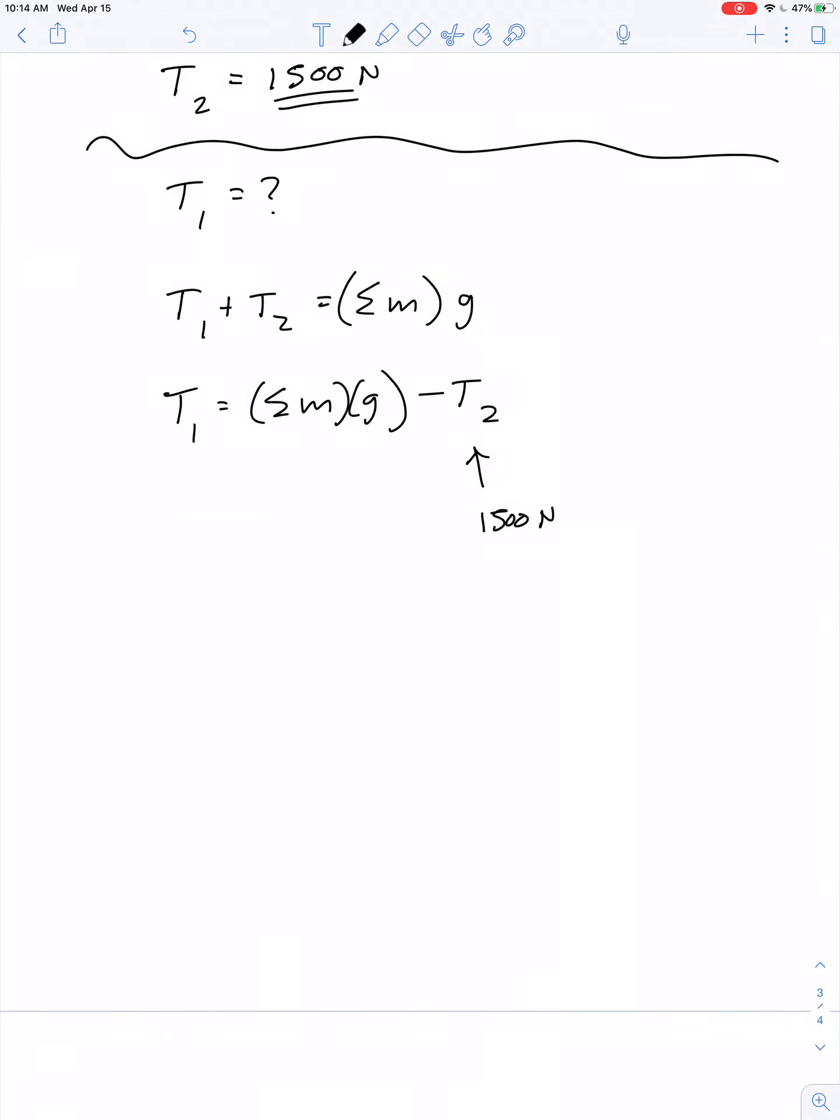T1 plus T2 equals all the mass added up multiplied by g. That means T1 is the combination of mass multiplied by g minus T2, and we already know T2 is 1,500 newtons. This gives us (80 plus 20 plus 70 plus 150) times 10, which is 3,200 newtons. So T1 equals 3,200 minus 1,500, which gives us 1,700 newtons.